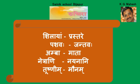Pasavaha matches Jantavaha. Pashu is an Ukarantha Pullinga shabda, Jantu is also Ukarantha Pullinga. Amba matches Mata - Amba is Akarantha Strilinga, Mata is Rukarantha Strilinga. Netrani matches Nayanani - Netram, Netre, Netrani and Nayanam, Nayane, Nayanani. Tushnim matches Maunam.